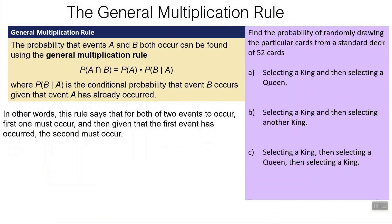The conditional multiplication rule is that if we want the probability of two things happening — like thing A happening and then thing B happening, both of them — we say it's the probability of A happening, times the probability of B happening given that A has already happened. So A happening might change the probability of B happening, so we want the conditional probability for the second one.